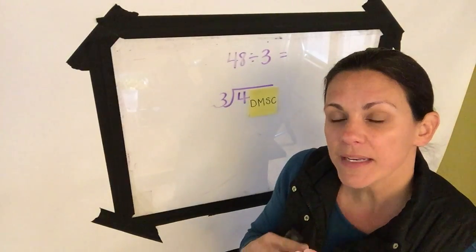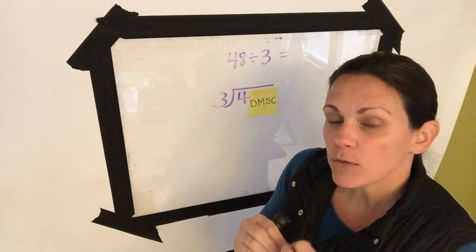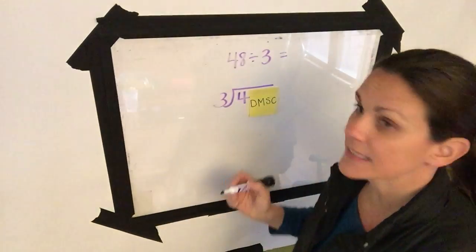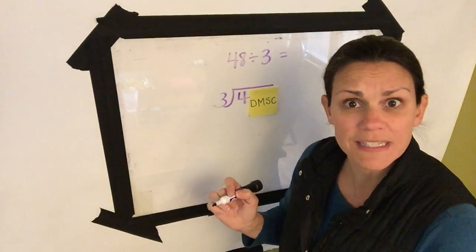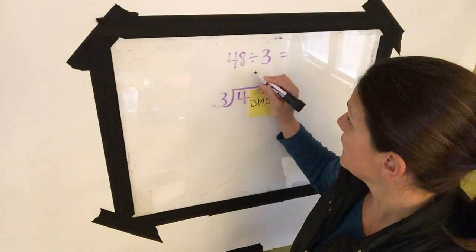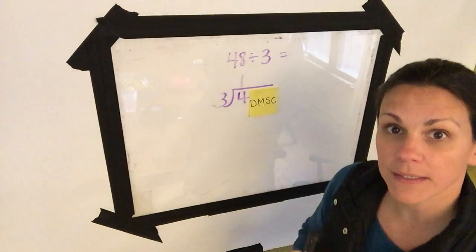So we think to ourselves, how many groups can I make of 3 without going over? I can't say I'm going to do 2 groups, that would be 6. But I could do 1 group of 3. So the 1 goes on top.